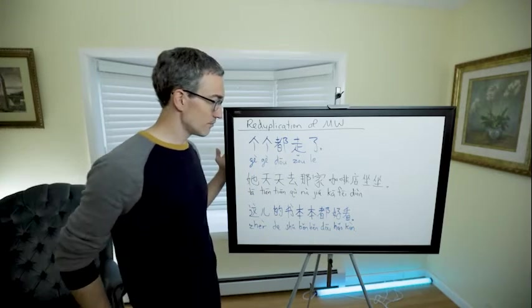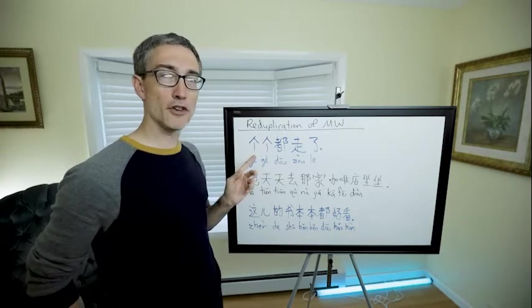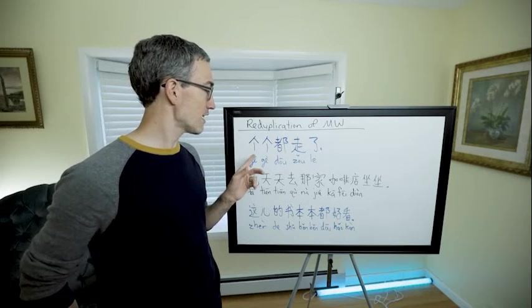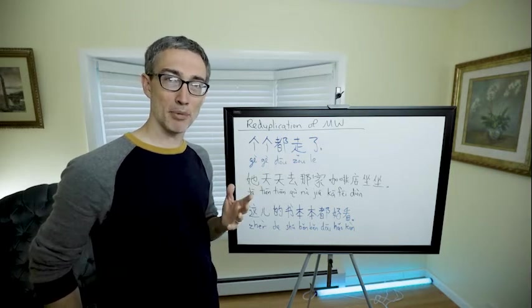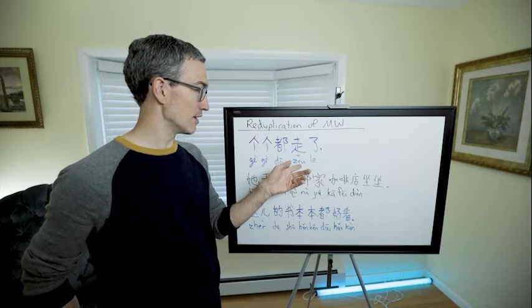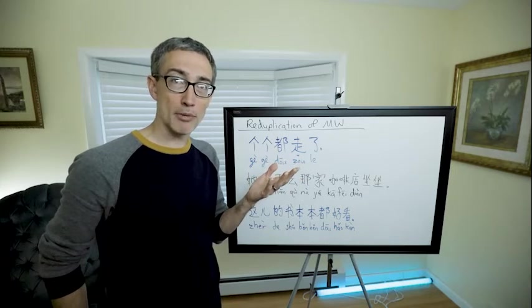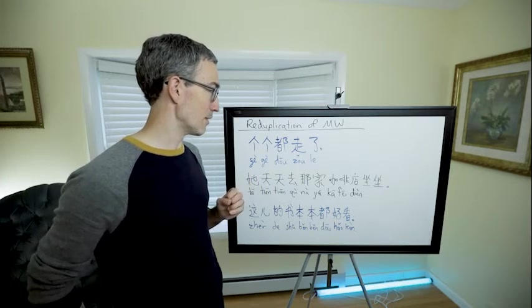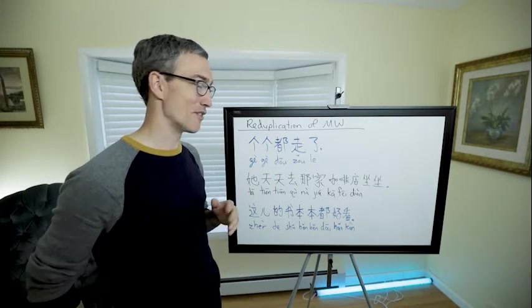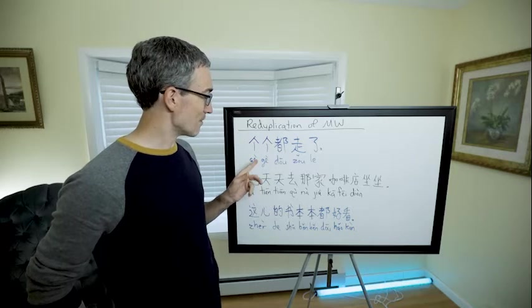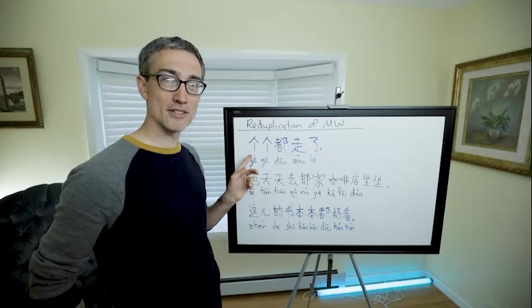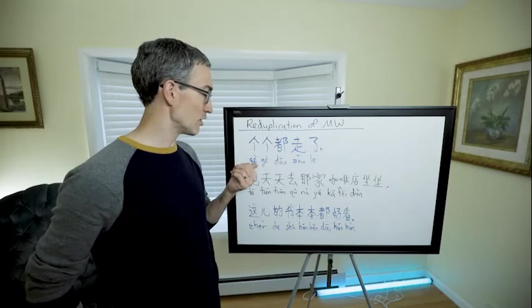So 个个, now 个 can refer to many, many things, right? But when you say 个个, you're usually talking about people, especially when you're talking about leaving or walking away, because you know apples don't usually do that. I guess you could talk about them having left if someone takes them or whatever, but anyway, 个个 is talking about people, so that means all the people, every person, just like 每个人, you can say 个个. 个个都走了 - so reduplicating the 个 means all people because 个 would be referring to people.